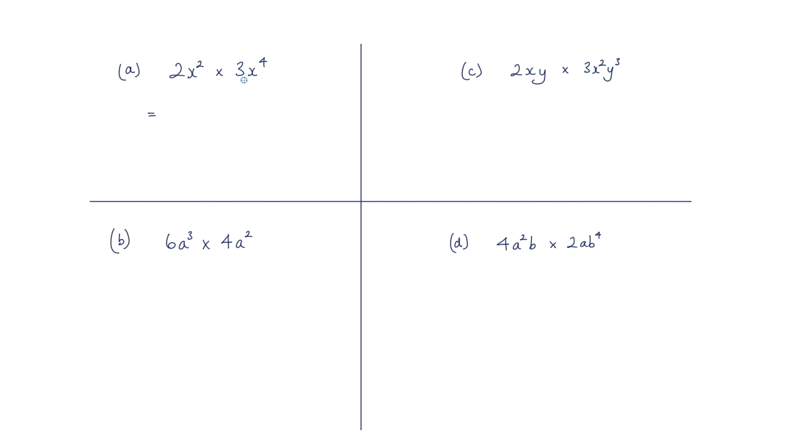So 2 multiplied by 3 is 6. We've got x squared multiplied by x to the power of 4. And when we're multiplying these we just add the powers. So I'm going to get 6x to the power of 6. That's because we've added the 2 and the 4 to give this 6.